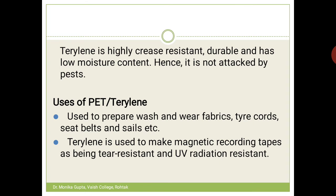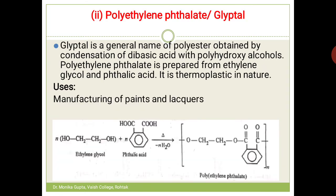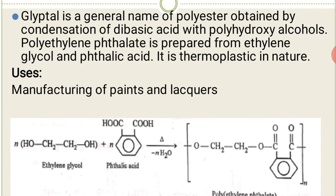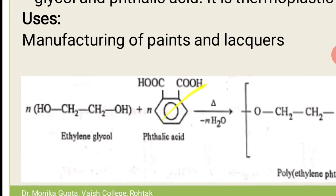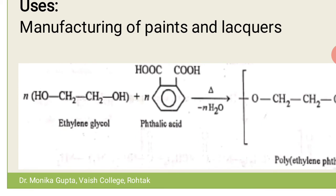So that was our first polyester, Terylene. The second is Glyptal, which is polyethylene phthalate. There is only a slight change from Dacron: in Dacron, glycol is condensed with terephthalic acid, but in Glyptal, glycol is condensed with phthalic acid. In phthalic acid, the two COOH groups are at the ortho position on the benzene ring.